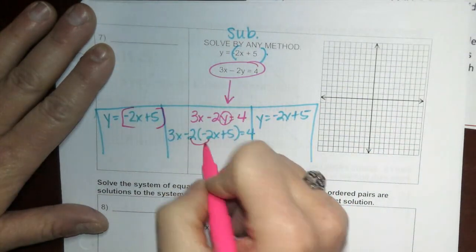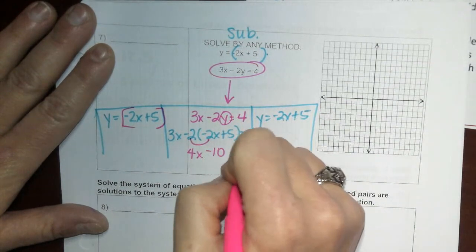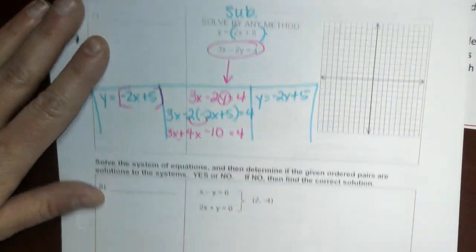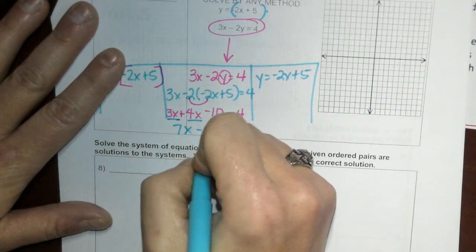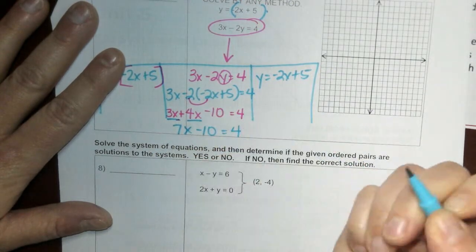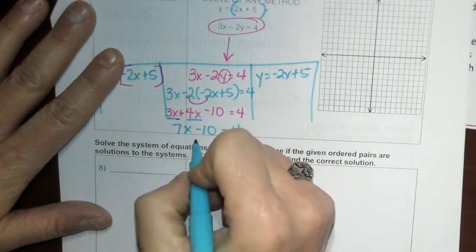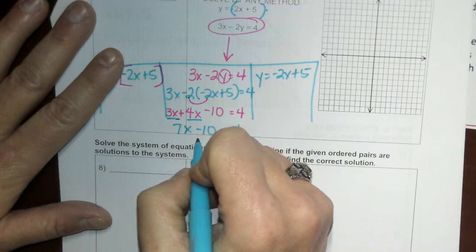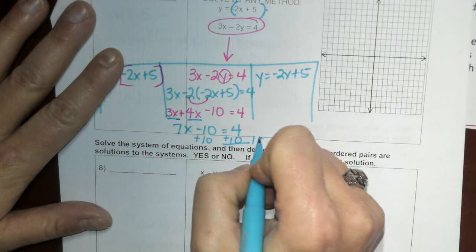3x minus 2 times (negative 2x plus 5) equals 4. So I'm going to distribute this, 4x minus 10 equals 4. Can't forget about that 3x at the beginning. So let's combine our like terms, we get 7x minus 10 equals 4.